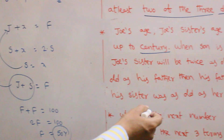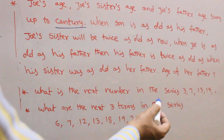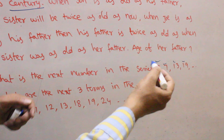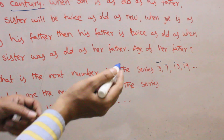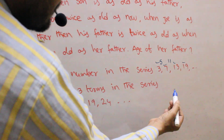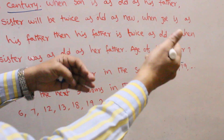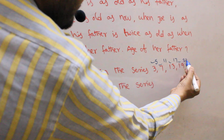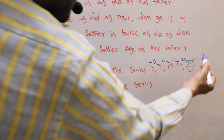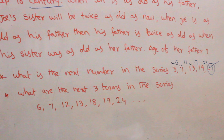Next question: what is the next number in the series? Just observe: 3, 7, 13, 19. What are these numbers? Prime numbers. But notice that 5, 11, and 17 are also prime numbers — these are the alternating prime numbers being skipped. After 19, the next prime is 23, which is skipped, and the next prime is 29. Your answer is 29. The logic is alternative prime numbers.